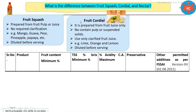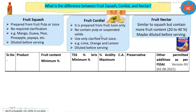Cordial is made mostly from citrus fruits, in which the juice is extracted, must be clarified, and then sugar is added after clarification. Dilution is also required before serving. Mostly lime, orange, and lemon are used for the preparation of cordial.